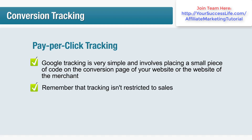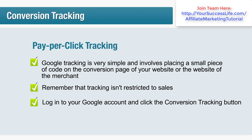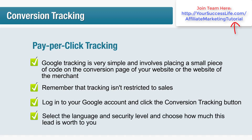Remember that tracking isn't restricted to sales. AdWords tracking lets you follow leads, signups, page views of an important page, or any other detail specific to your business. To get started, log into your Google account and click the conversion tracking button. Choose the conversion type you wish to track — for most people this will be purchase or lead. Select the text format that best fits your website, choose the background color, and note that this small piece of text will be visible to your customers, as Google believes people should be aware their movements are being tracked.